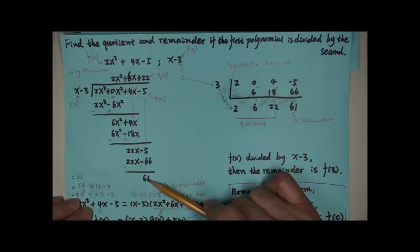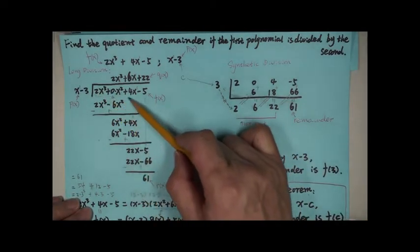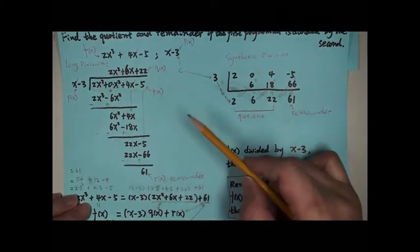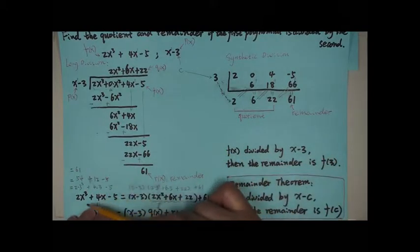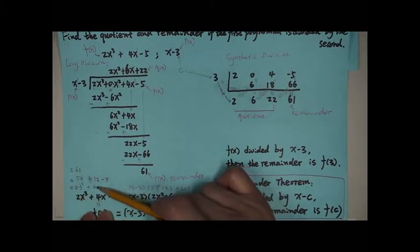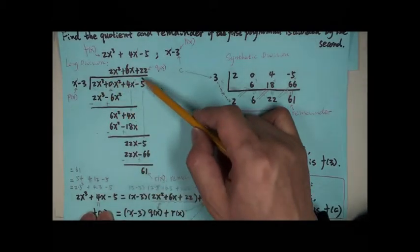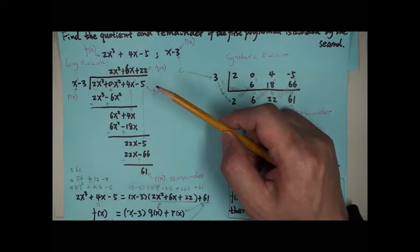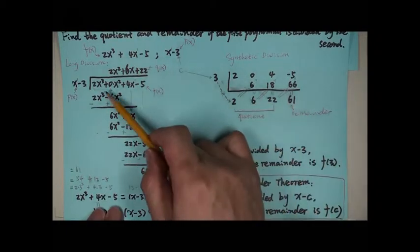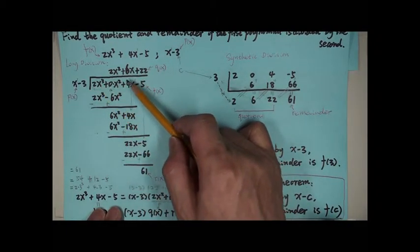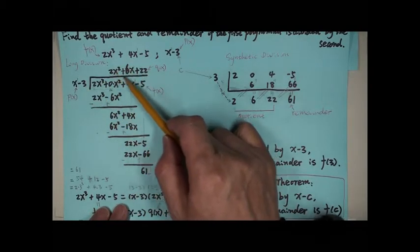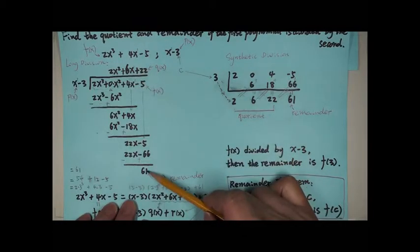Now we know this big expression — by the division algorithm for polynomials — this big polynomial can be written as x minus 3 times the quotient, plus 61.